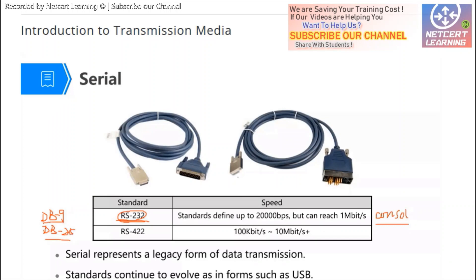Another widely used connector for serial lines is the V.35 connector. The EIA also introduced other standards such as RS-422, which increased speed and distance, but these are still not widely used today. Nowadays the most widely used serial connection is USB — Universal Serial Bus.